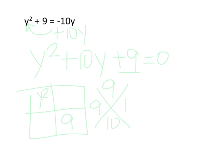So 9 times 1 multiplies to 9, and 9 plus 1 adds to 10, so those are the right numbers.